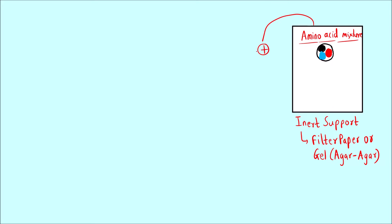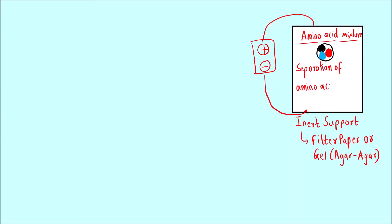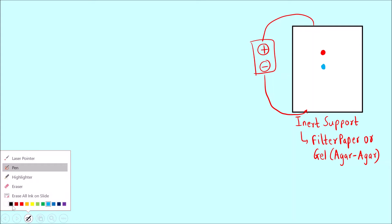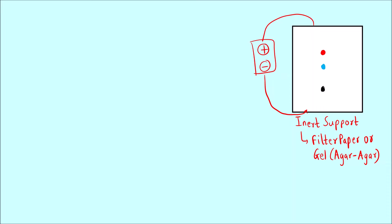Then what you do is apply an electric field — connect it to a cell or a battery. When you apply an electric field, there is separation of the amino acids. All three amino acids get separated based on their overall charge. Finally, all three different spots will be separated — one spot here, another here, and the third somewhere else.